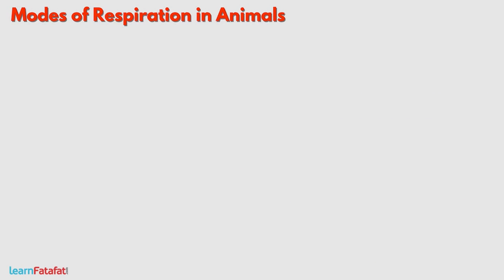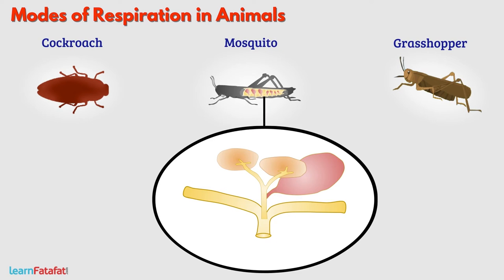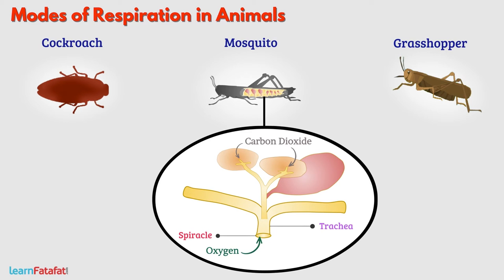Some insects such as cockroach, grasshopper, and mosquito have tiny holes on their body called spiracles. These are connected to a network of air tubes called tracheae. Oxygen-rich air enters the holes, passes through the tracheae, and gets transported to body parts. The tracheae collect carbon dioxide from the body parts and release it into the air through the spiracles.